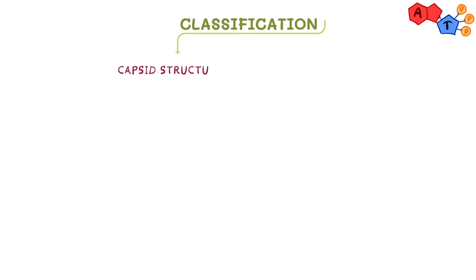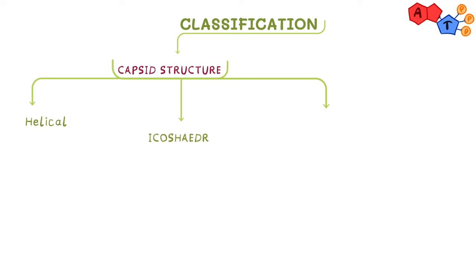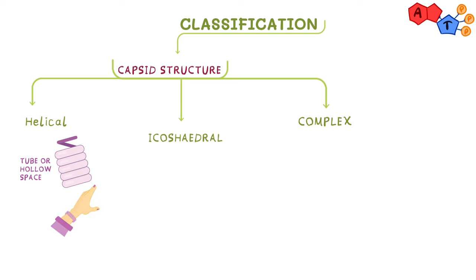The second way we can classify viruses is by capsid structure. Depending on the structural organization of the capsomeres — the proteins making up the capsid — we can have three main types. In helical viruses, the circular capsomeres are attached helically, creating a tube or hollow space for the nucleic acid within. Think of it as wrapping a long beaded bracelet around your wrist, the beads being the capsomeres. An example is tobacco mosaic virus.